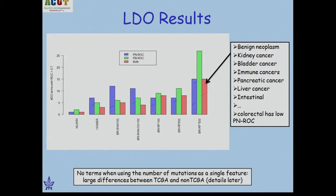Here are the results comparing different algorithms. For each algorithm we count the number of disease ontology terms that separate positives from negatives, positives from background, and both — using a raw score threshold of 0.7. The modified random forest performs much better than all other algorithms. The well-classified terms cover very different branches of the disease ontology — from kidney cancer to benign tumors. For example, colorectal cancer is very well separated from background, but not from other intestinal cancers, so it scores high on background but not on the combined measure.